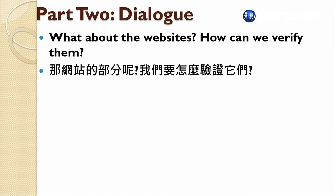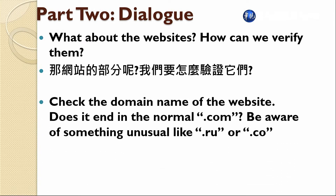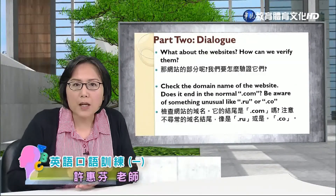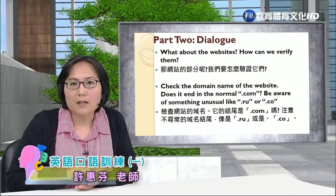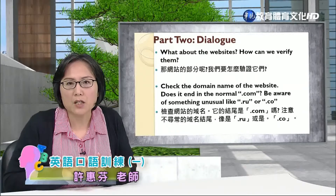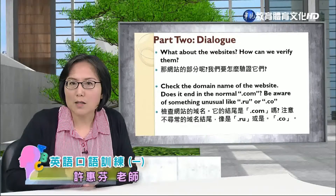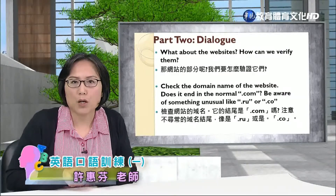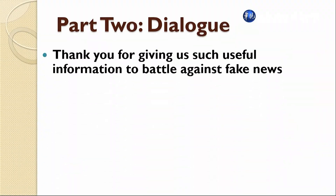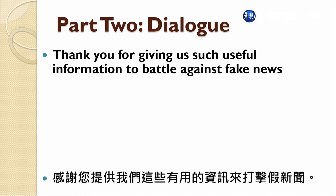Check the domain name of the website. Does it end in the normal .com? Be aware of something unusual like .ru or .co. 要小心，检查网站的网域名称，那些比较不寻常的网域名称结尾，像是.ru or .co，这可能就是比较不正常的网域，你就要留意，不要太相信.